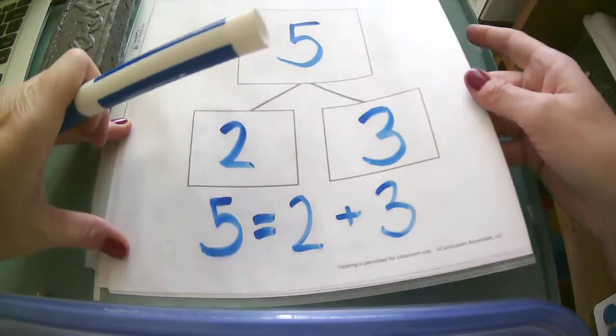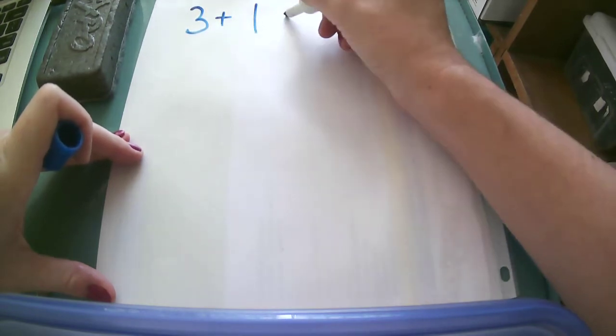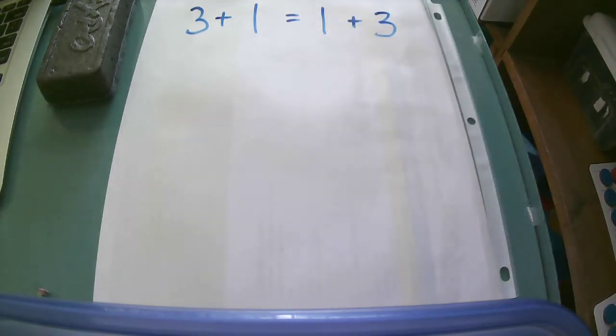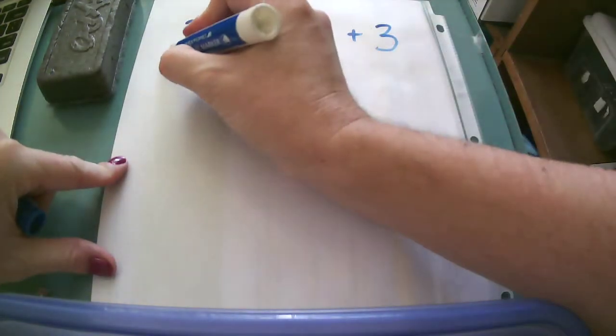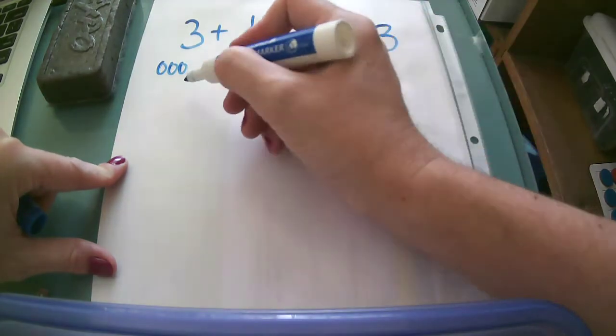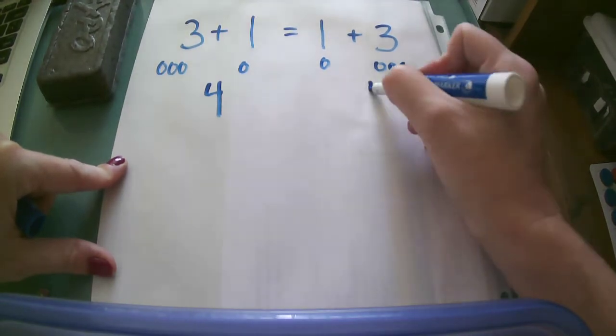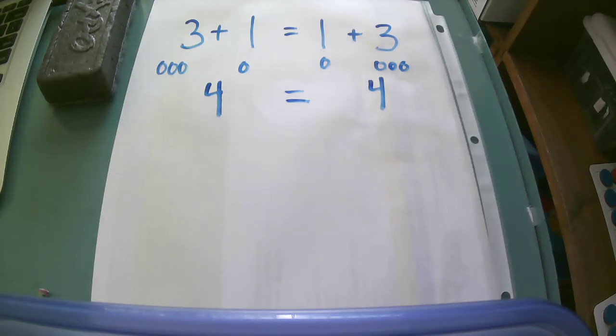Let's take a look at some other problems using that equal sign. Let's say we have 3 plus 1 and then 1 plus 3. Looking at this number sentence, are they equal? Does 3 and 1 together equal the same as 1 and 3? If I have 3 and 1, it gives me 4. If I have 1 and 3, it gives me 4. I know that 4 is equal to 4 or is the same as 4.